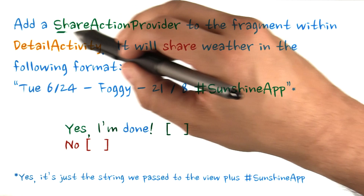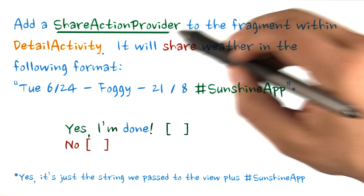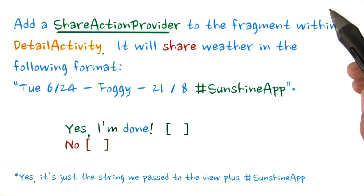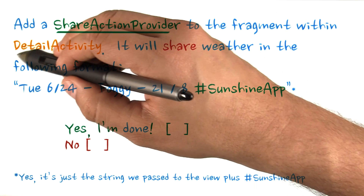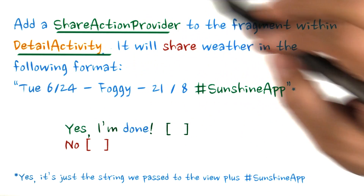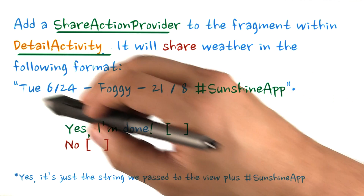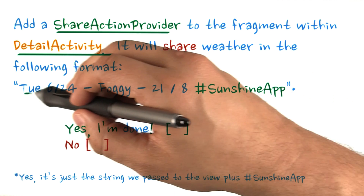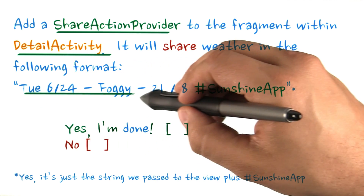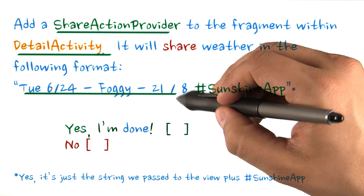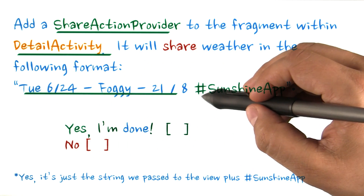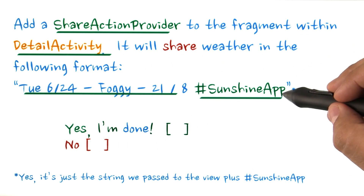Add a share action provider to the fragment within the detail activity. It will share weather in the following format — it's just the string we passed into the view plus hashtag sunshine app.